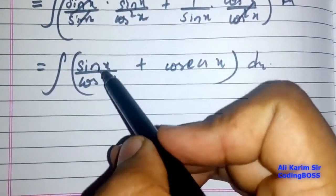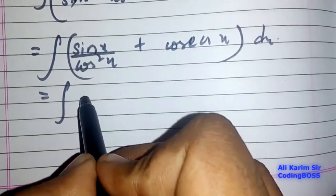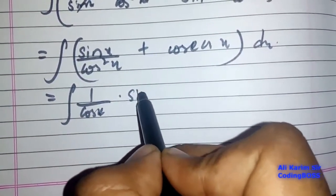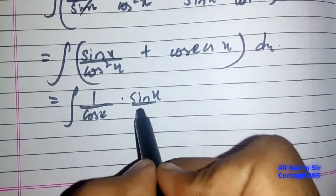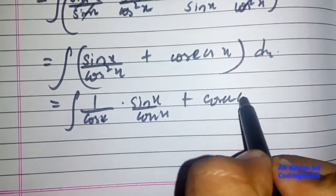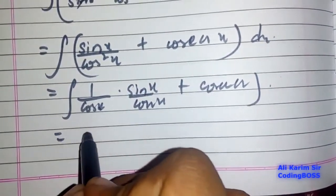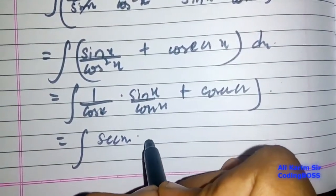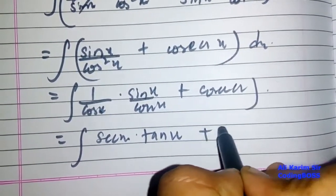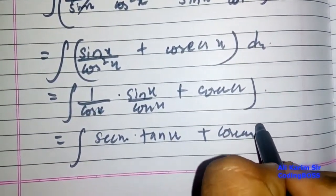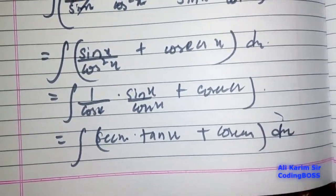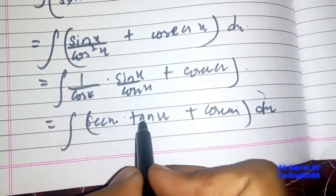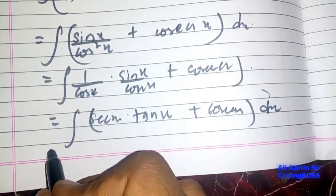I can solve this further as integration of 1 upon cos x into sin x upon cos x plus cos x. So 1 upon cos x is sec x, and sin upon cos is tan x. This gives us integration of sec x tan x plus csc x.